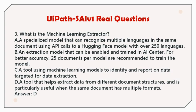Question 3: What is the machine learning extractor? a. A specialized model that can recognize multiple languages in the same document using API calls to a Hugging Face model with over 250 languages. b. An extraction model that can be enabled and trained in iCenter; for better accuracy, 25 documents per model are recommended. c. A tool using machine learning models to identify and report on data targeted for extraction. d. A tool that helps extract data from different document structures, particularly useful when the same document has multiple formats. Answer: D.